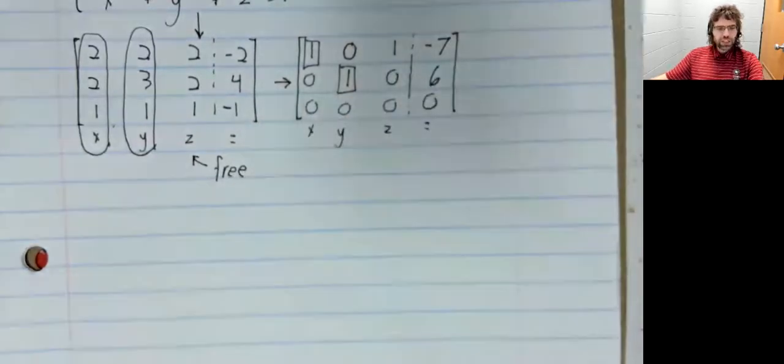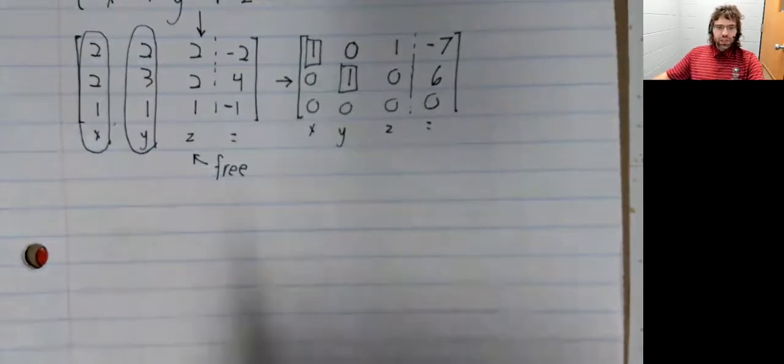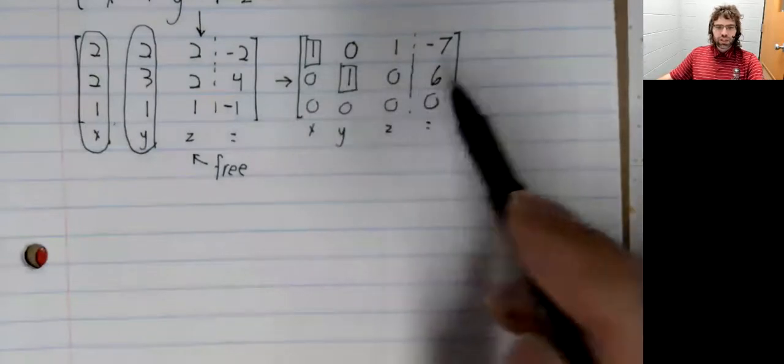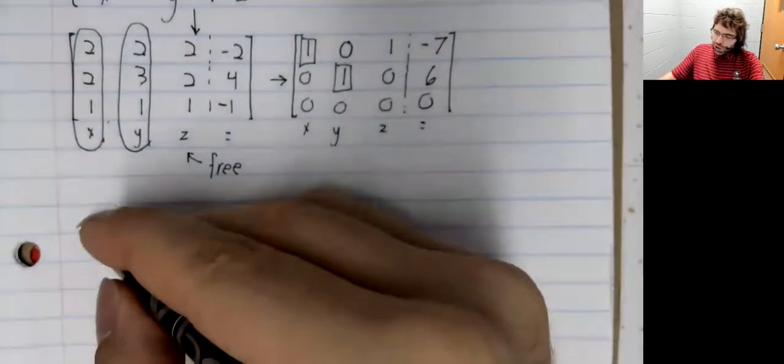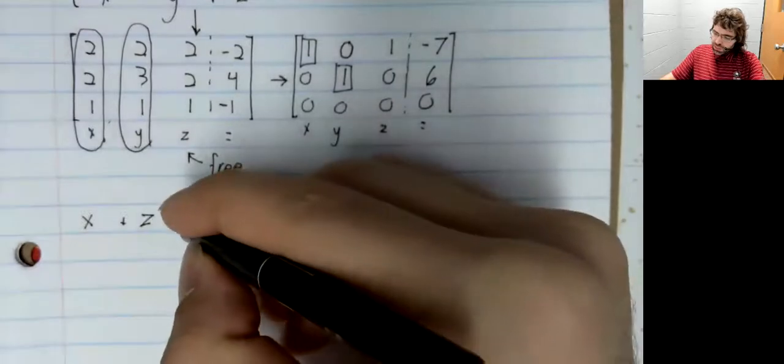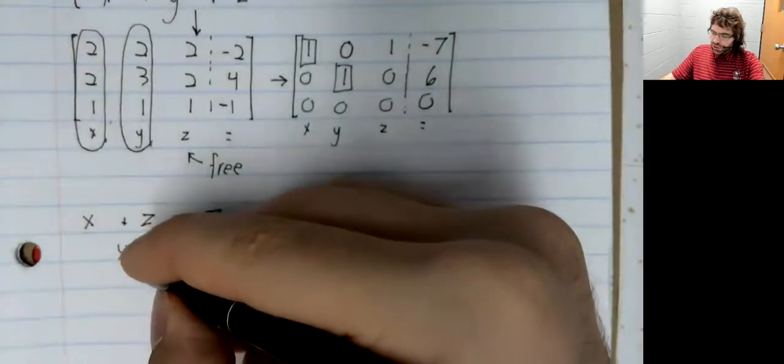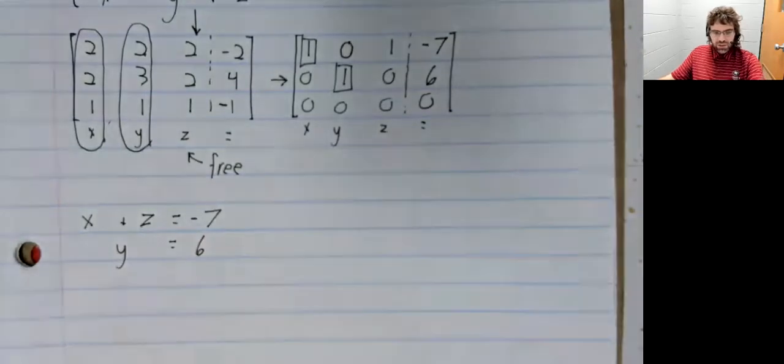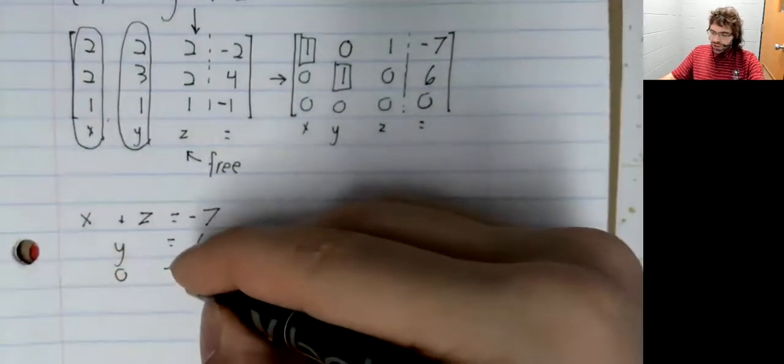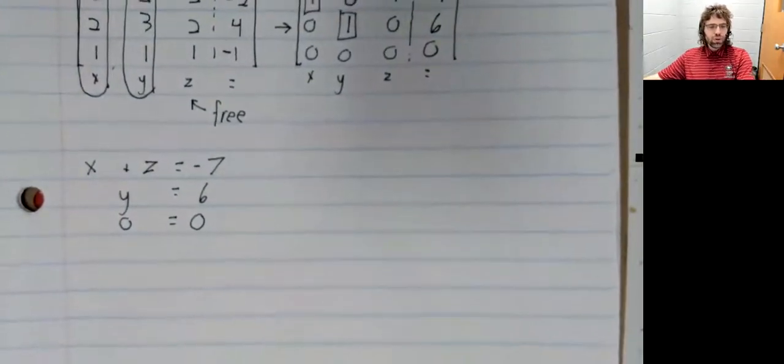And we have a free variable, which means we have infinitely many solutions. And let's look at what these are, what these rows are telling us. This first row says that x plus z equals negative seven. The second row says that y equals six. This third row says rather unhelpfully that zero equals zero.